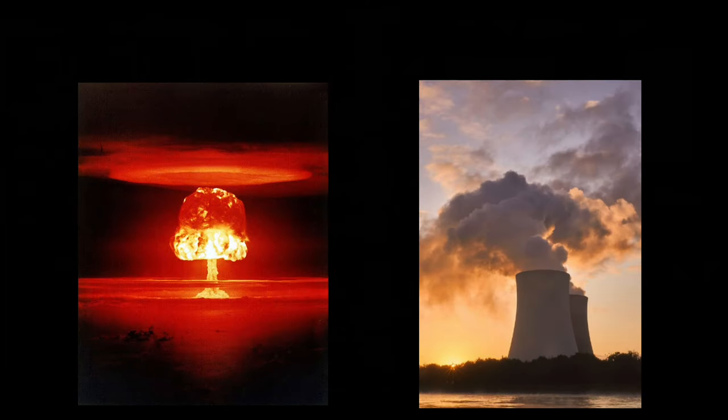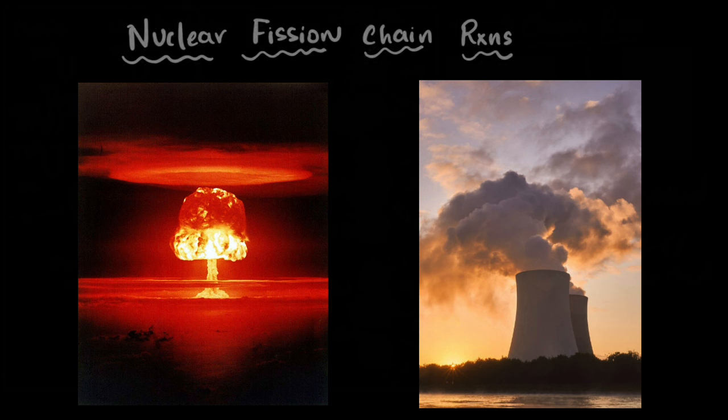An atomic bomb and a nuclear power plant work on the same basic principle: nuclear fission chain reactions. But what exactly is this? And more importantly, if the same thing is happening inside both a bomb and a nuclear reactor, then why doesn't a nuclear reactor just explode like a bomb? What's the difference?